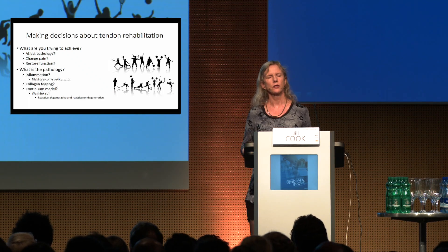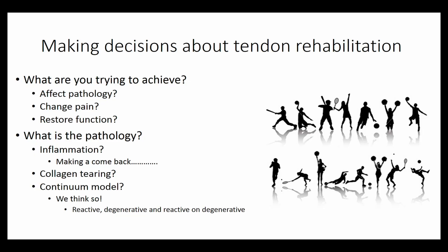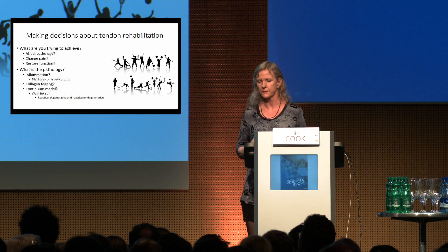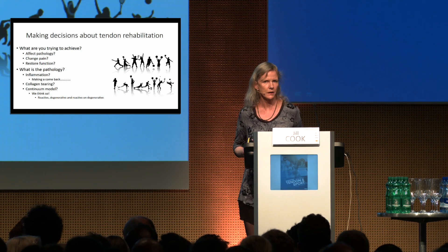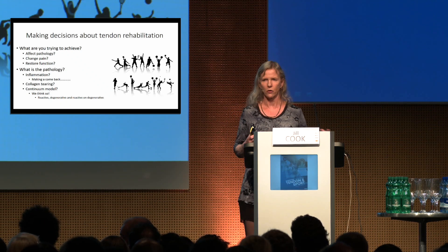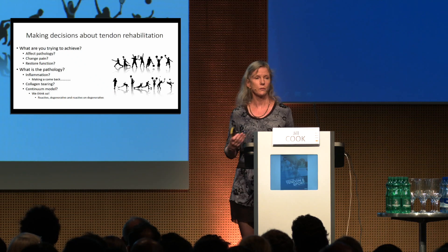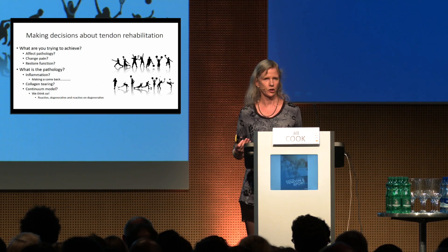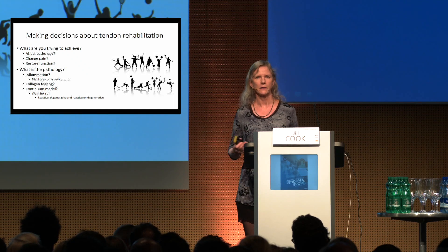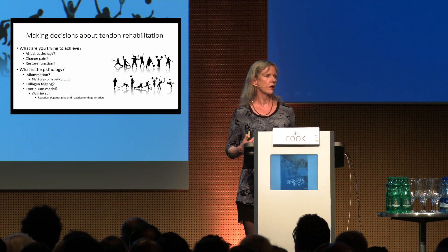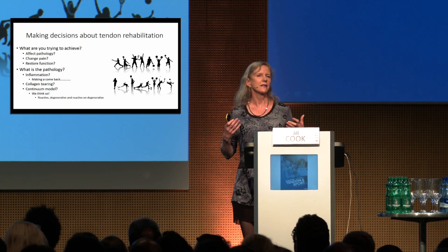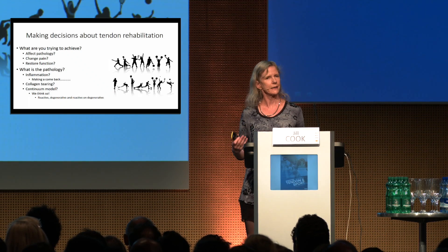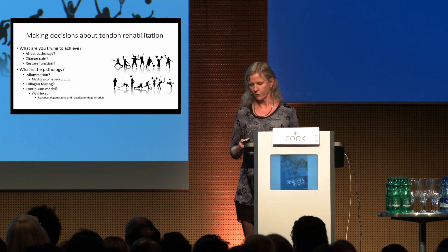Before we get on to understanding pain and function, I want to run through some issues about pathology and structural change. In 2017, we still don't fully understand what happens in pathology and how a tendon develops it. Inflammation — we used to think was an issue, but in the 80s and 90s we thought that had gone away; it is now making a comeback. Collagen tearing was what I learned. And Craig and I developed the continuum model, where we think the cell is key to the development of pathology.